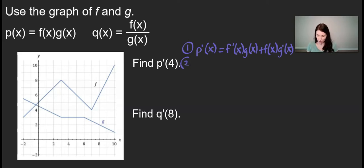It is so important to just take that time to write out the derivative in terms of x. Step 2, I then write out that same derivative with an input of 4. So then I say, okay, p prime of 4 is equal to f prime of 4 times g of 4 plus f of 4 times g prime of 4.